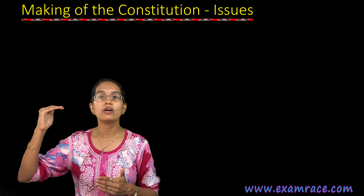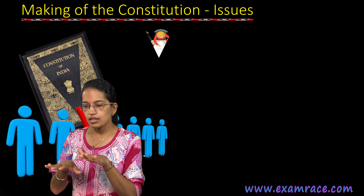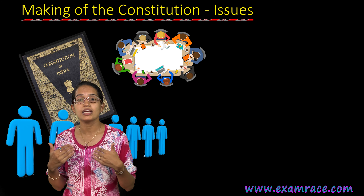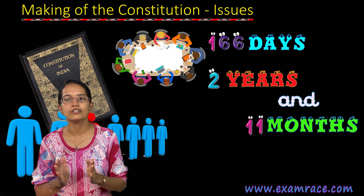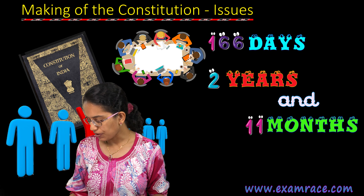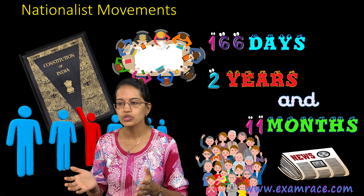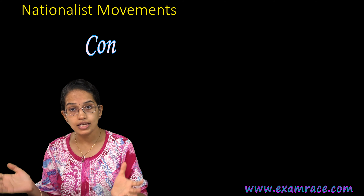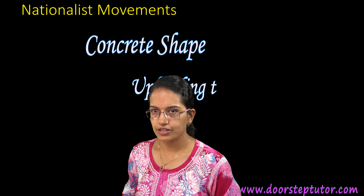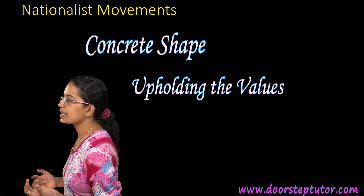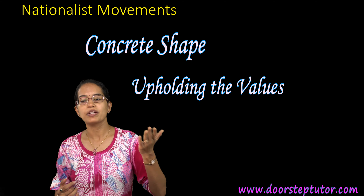There were attempts to reach consensus and bring things to par. Over a period of nearly 166 days — or 2 years and 11 months — this was finally resolved and the constitution came into being. It was open to a lot of public and press discussion. Bringing a concrete shape to the constitution was very, very important — upholding the values laid down in the constitution and bringing in the best summary of the principles from the nationalist movement for independence.